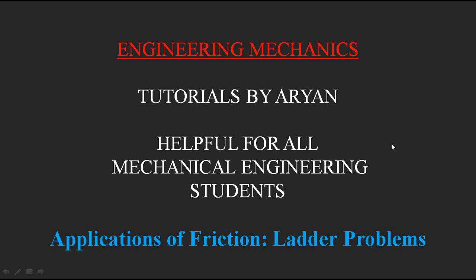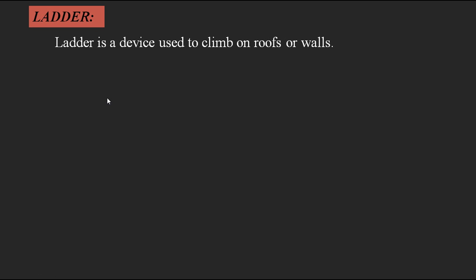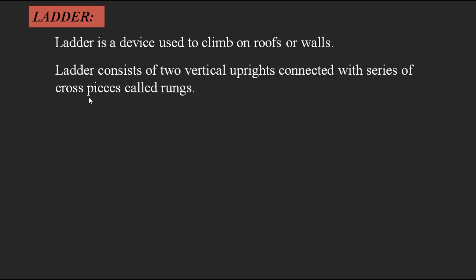First I would like to give a definition for a ladder. A ladder is a device used to climb on roofs or walls — to reach the top position of a building or wall. A ladder consists of two vertical uprights connected with a series of cross pieces.